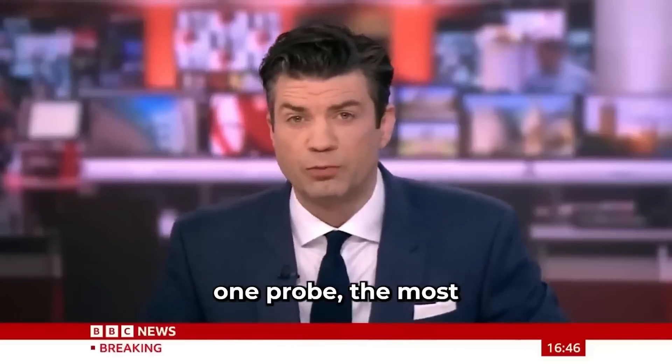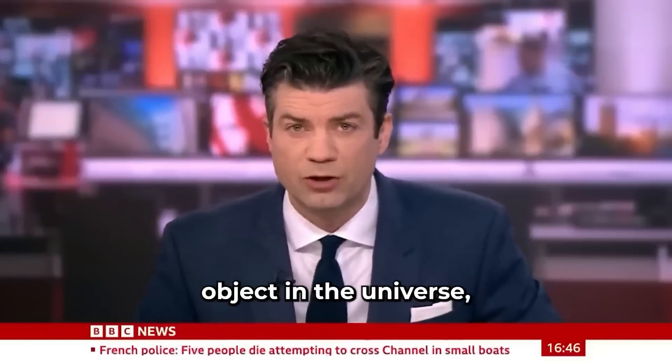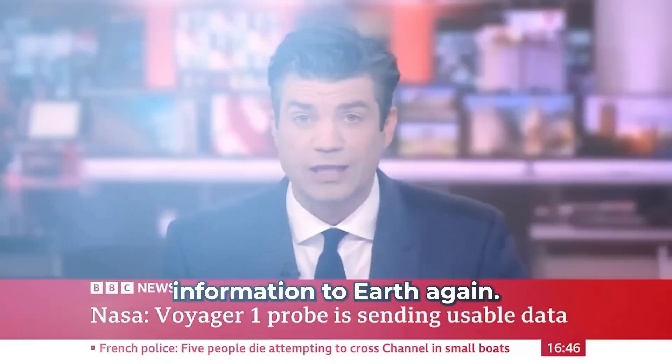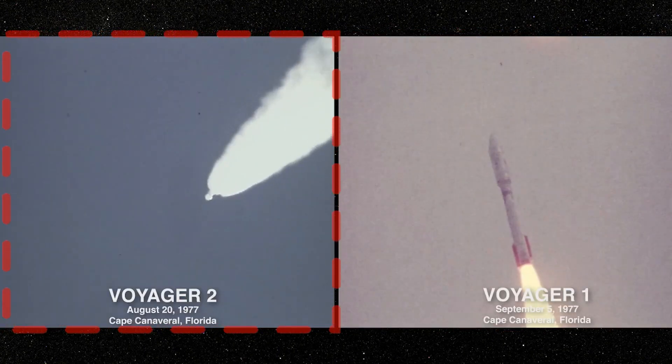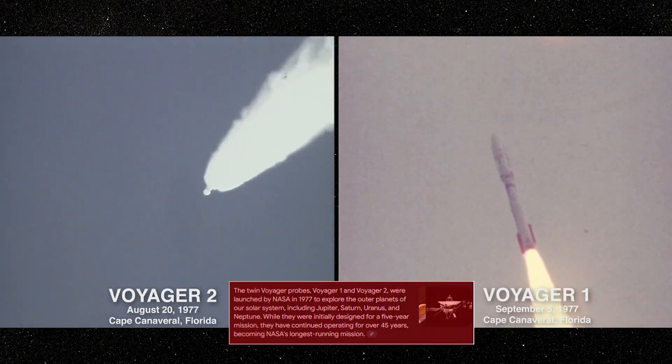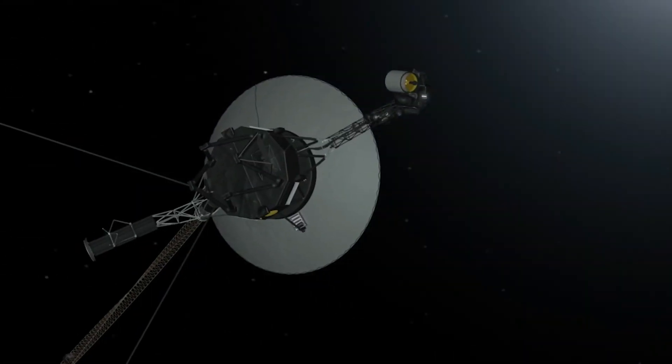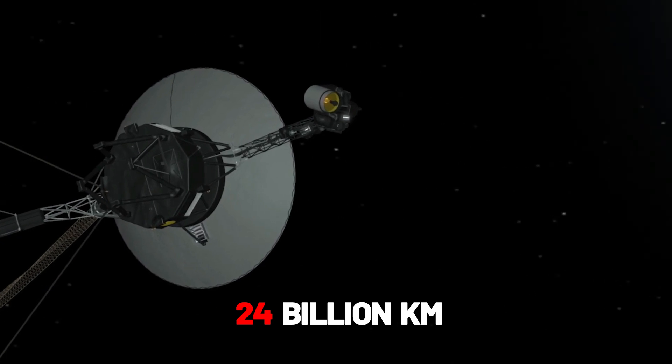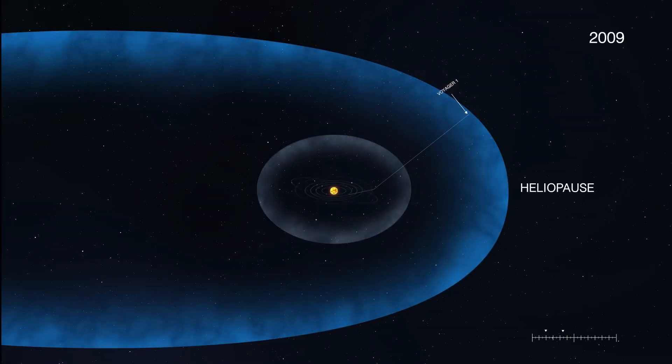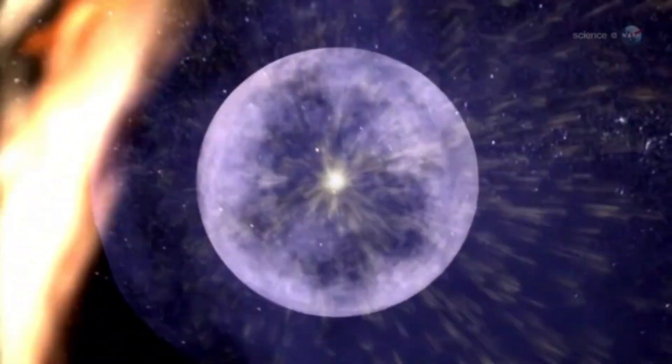NASA says its Voyager 1 probe, the most distant human-made object in the universe, is sending usable information to Earth again. NASA engineers have re-established communication with the Voyager 1 spacecraft, Earth's most distant emissary. Voyager 1 and Voyager 2 launched in 1977 for a five-year planetary tour and are still transmitting, now 24 billion kilometers and 21 billion kilometers from Earth, adrift beyond the heliopause where the sun's influence ends.